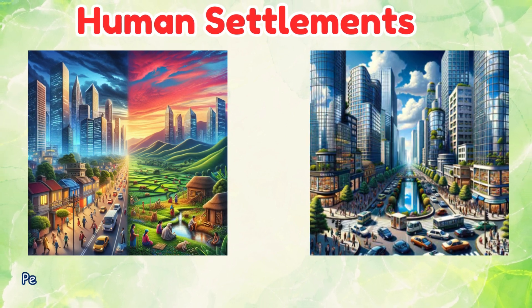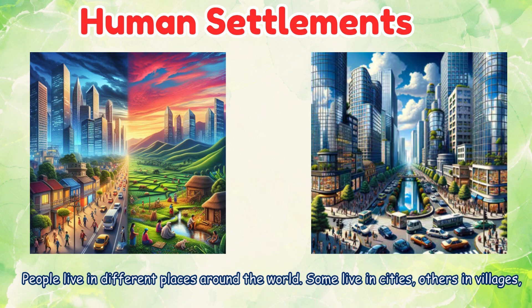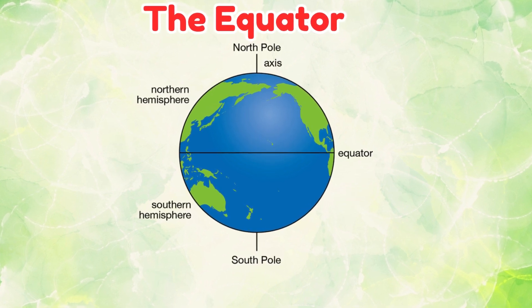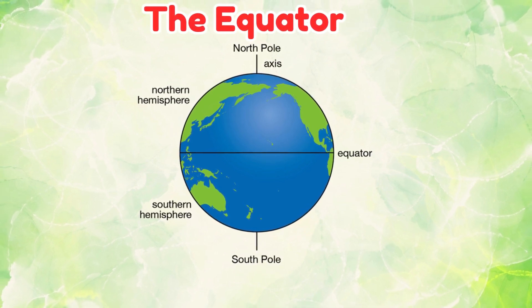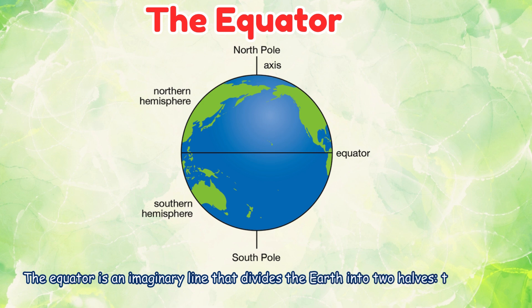People live in different places around the world. The equator is an imaginary line that divides the Earth into two halves: the northern hemisphere and the southern hemisphere.